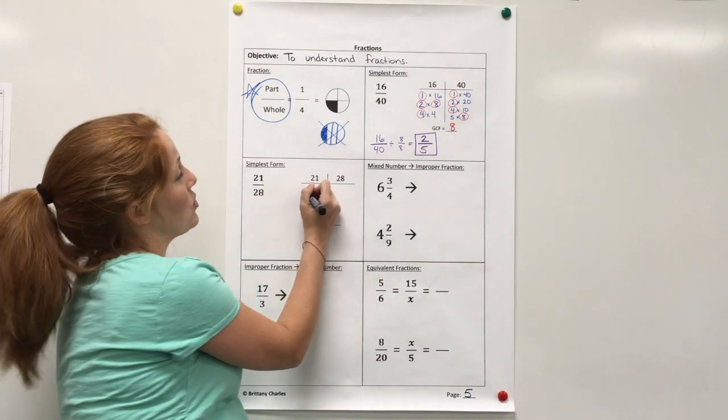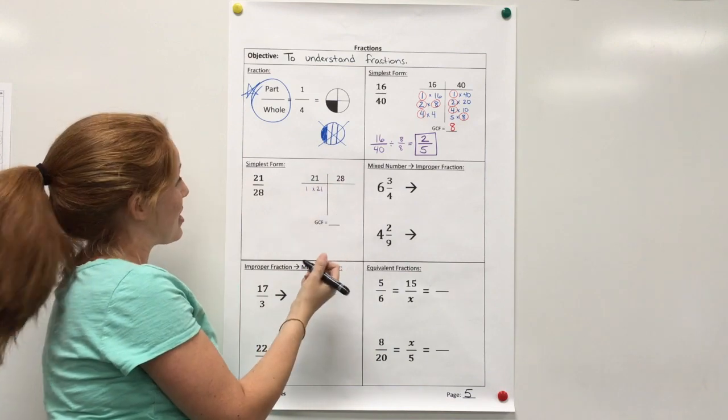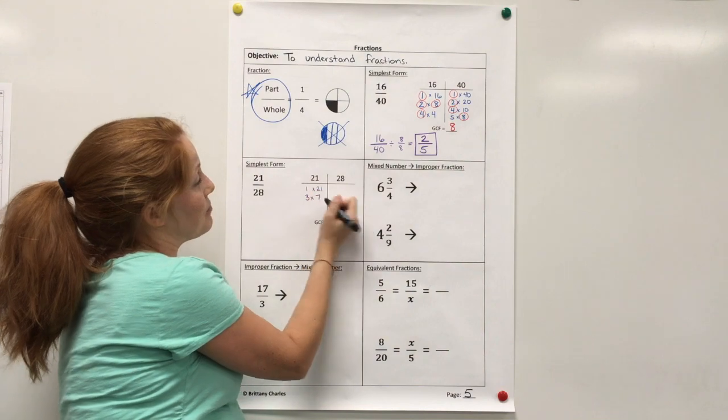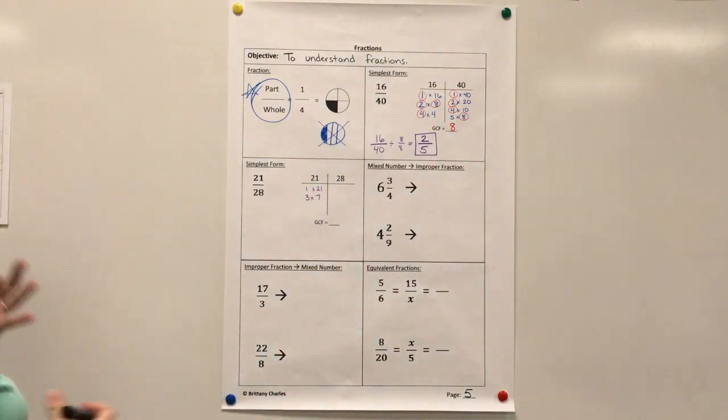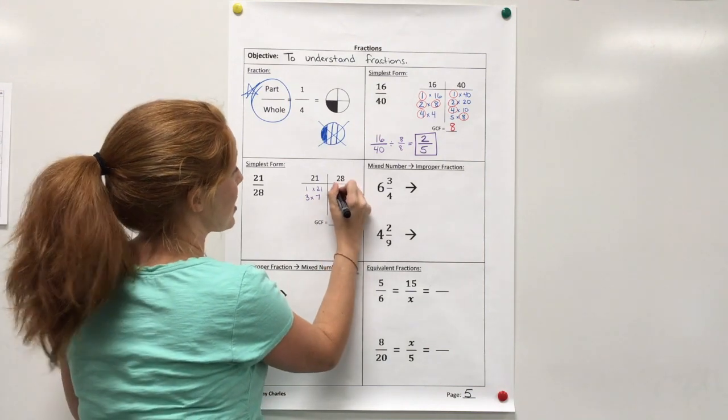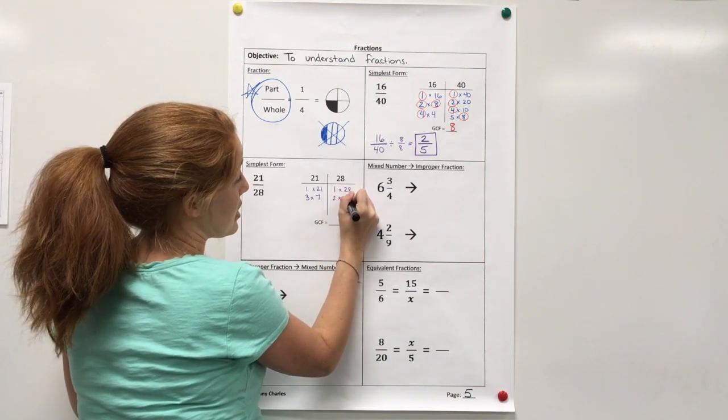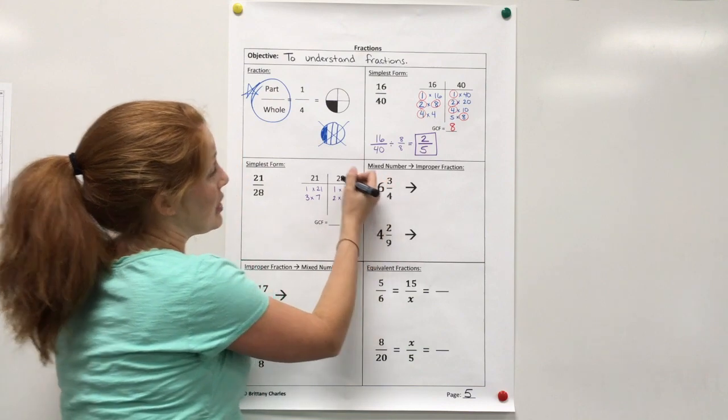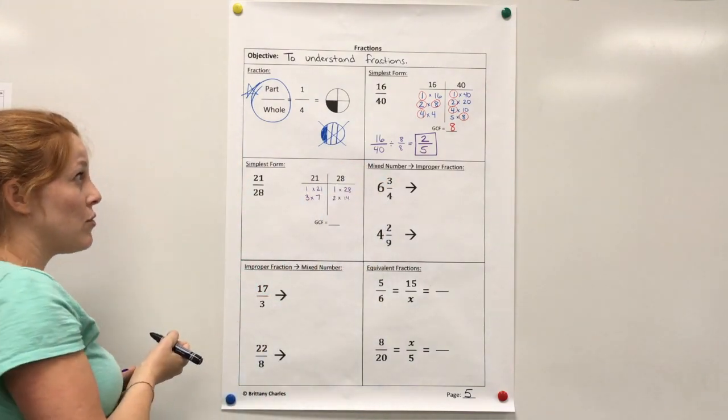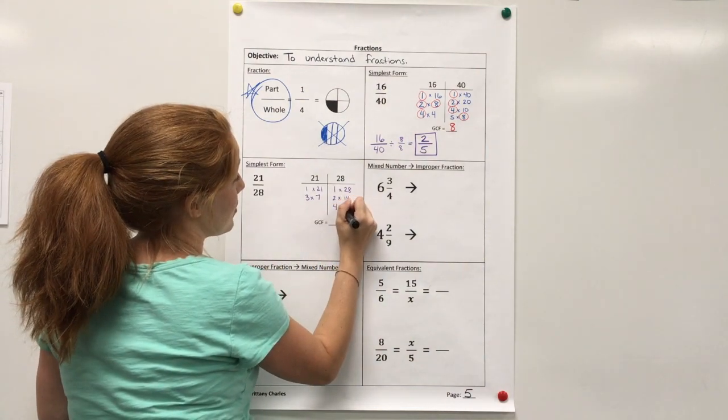Alright, 1 times 21, 2 is not going to work. 3 times 7, just think, is there anything else? Nope, I can't think of anything else. So now to 28, 1 times 28, 2 times 14. 3 is not going to work. 4, yes, I can do 4. That's 4 times 7.